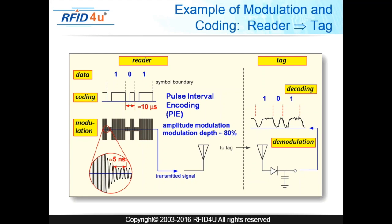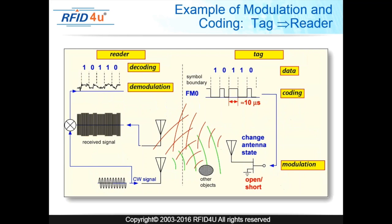The reader demodulates and translates the received data. Going the other way — on the reflected wave using passive backscatter — the tag sends data back using a method called FMO or Miller mode to identify zeros and ones. The reader receives the signal: a longer duration indicates a one, a shorter gap indicates a zero. A short gap is a zero and a long gap is a one — that's how the tag sends data back to the reader.